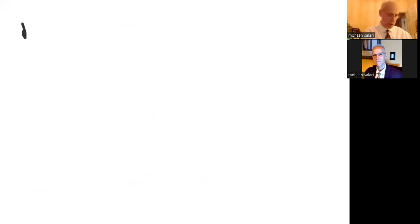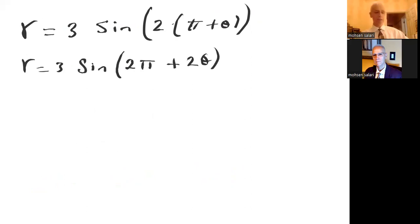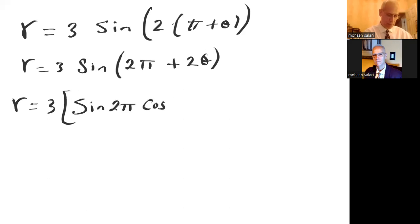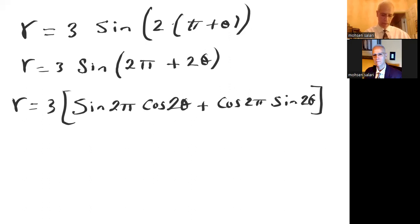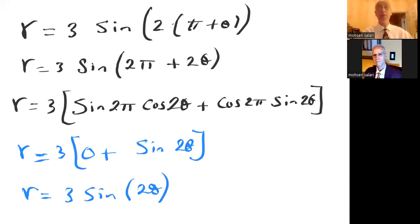Replacing theta with pi plus theta, I have r equals 3 times sine of 2 times pi plus theta. Expanding using the sine addition formula: sine of 2pi times cosine of 2 theta plus cosine of 2pi times sine of 2 theta. Sine of 2pi is 0, so the first term is 0. Cosine of 2pi is 1, so 1 times sine of 2 theta gives r equals 3 sine of 2 theta, which is the same as the original.